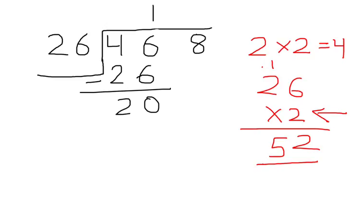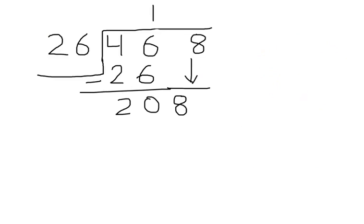Now let's bring down 8, which makes it 208. Now we have to divide 208 by 26. Again, we will hide one digit from both numbers.